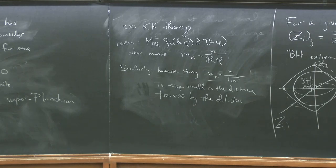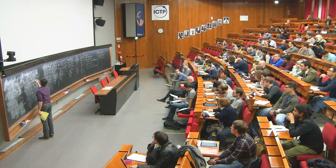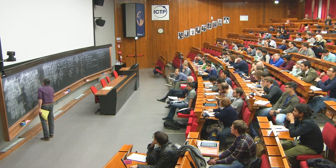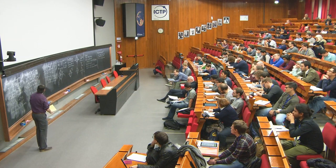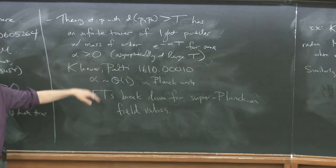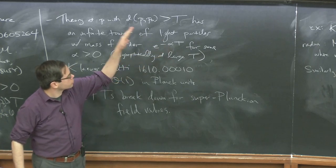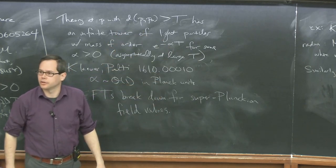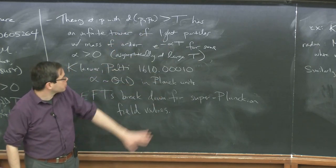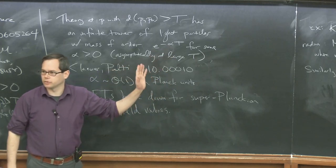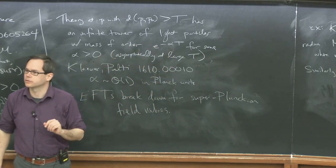The claim should be taken as an asymptotic claim about large t — the claim is that at large t there's some number α for which the masses are decreasing like e^{-αt}. It won't be exactly this; there will be corrections, but if we go to large enough t it will be this, where α is just some constant.